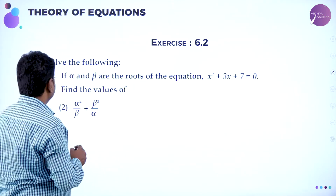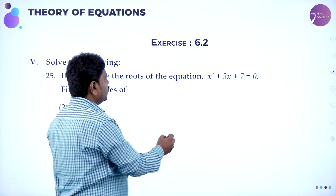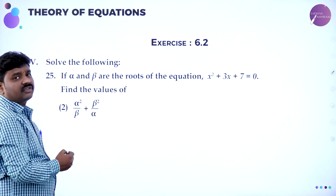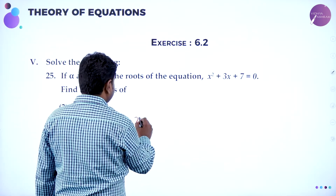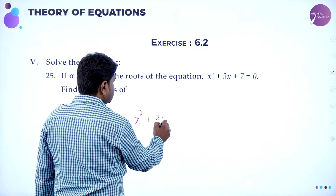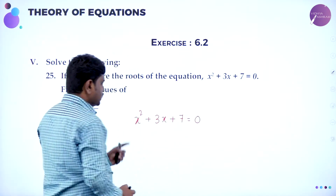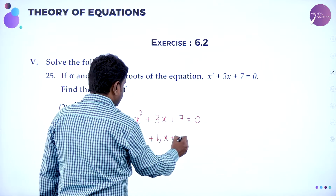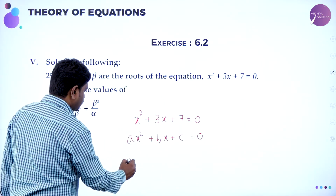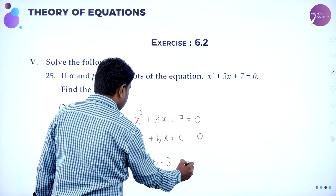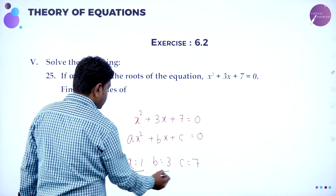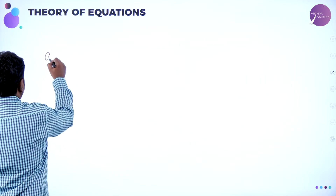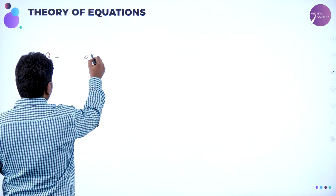Now we will go to the next problem. If alpha and beta are the roots of the equation x squared plus 3x plus 7 equal to 0, find the values of alpha squared by beta plus beta squared by alpha. Again by method of comparison: A is 1, B is 3, C is 7.